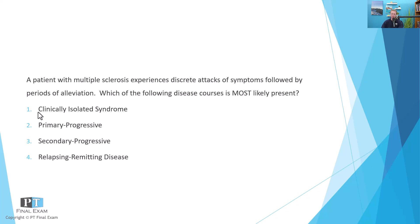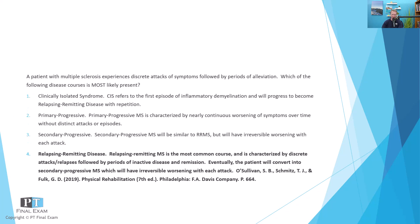The correct answer is option four — relapsing remitting disease. As you consider the disease courses or phenotypes experienced by a patient with multiple sclerosis, you'll see that the most common one is relapsing remitting MS, occurring in approximately 85% of patients. This is where you get periods of exacerbation or attacks of symptoms followed by periods of alleviation.